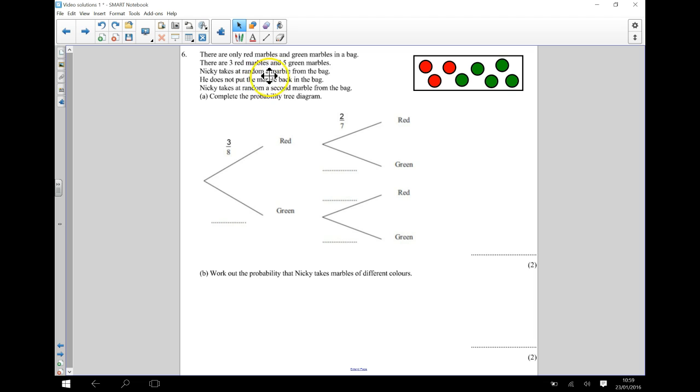Nicky takes at random a marble from the bag. He does not put the marble back in the bag. Now that's important. Nicky takes at random a second marble from the bag. And we now need to complete the probability tree diagram.